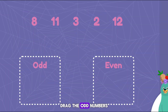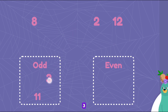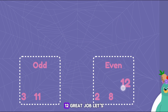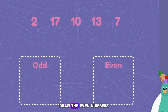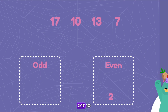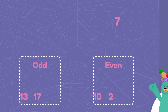Drag the odd numbers to the left. Drag the even numbers to the right. 11, seven, three, eight, two, twelve. Great job! Let's do it again. Drag the odd numbers to the left. Drag the even numbers to the right. Two, seventeen, ten, thirteen, seven.